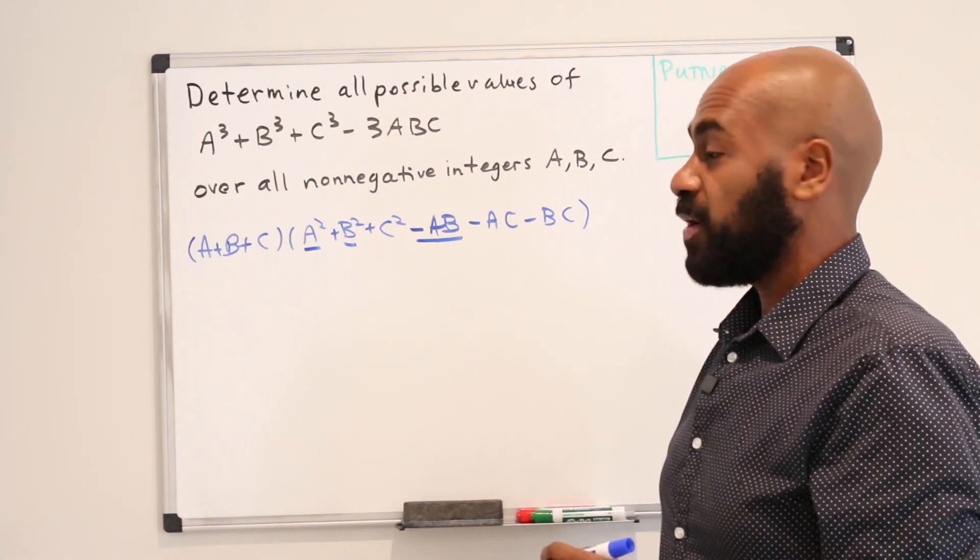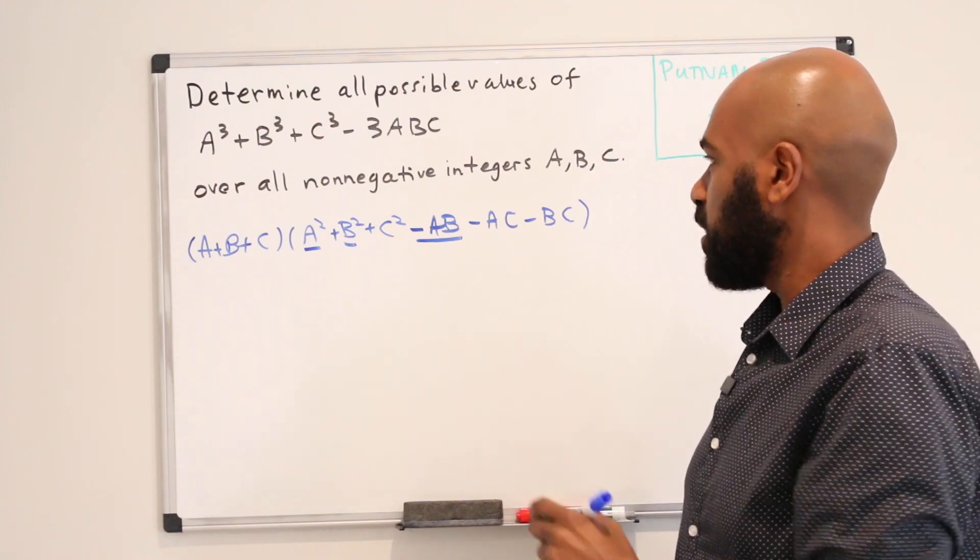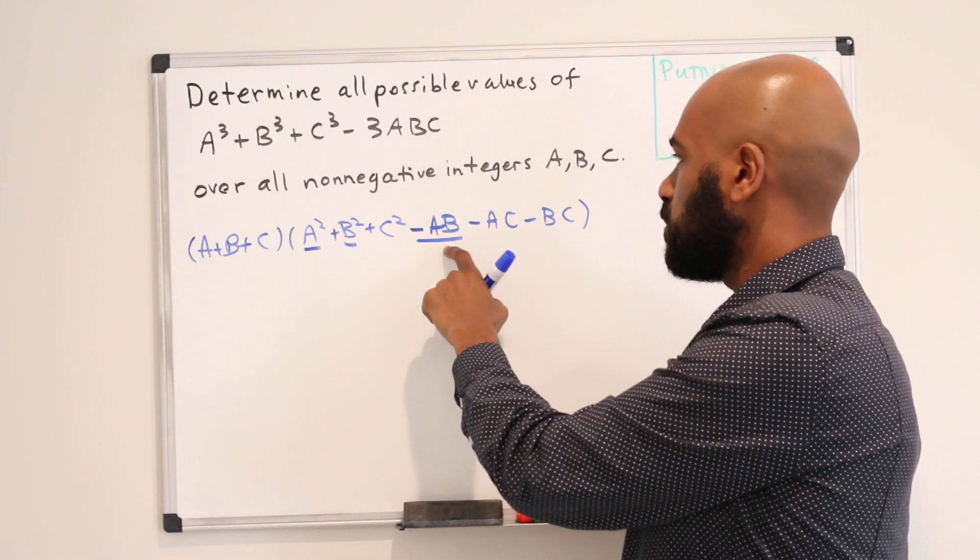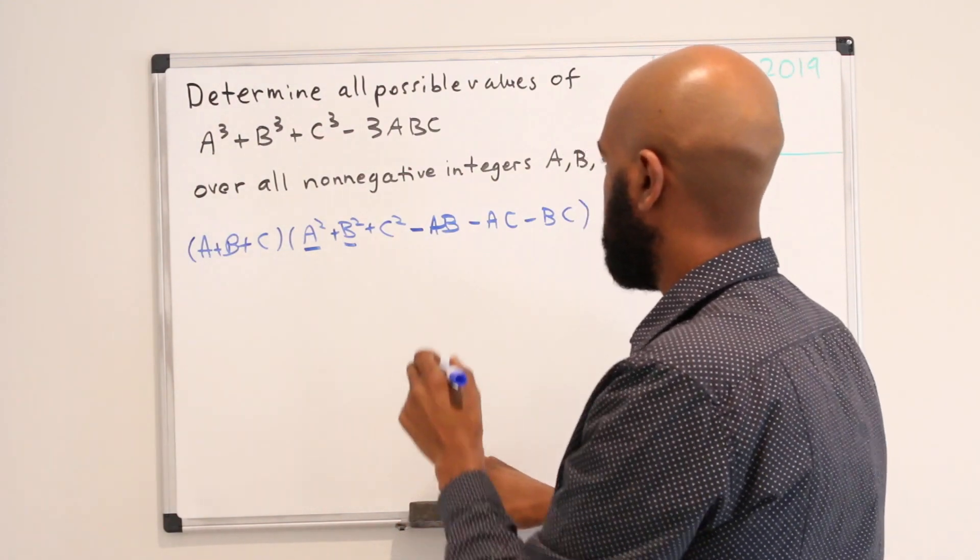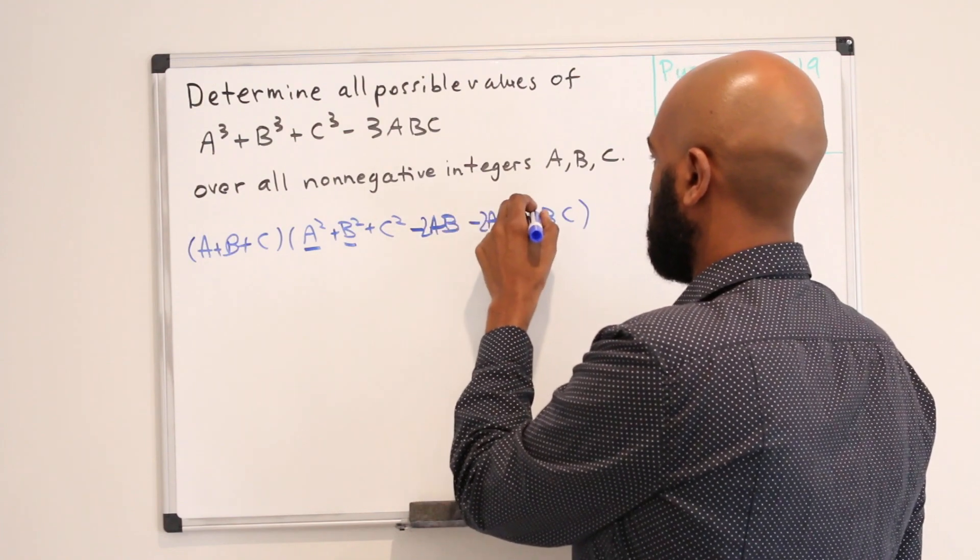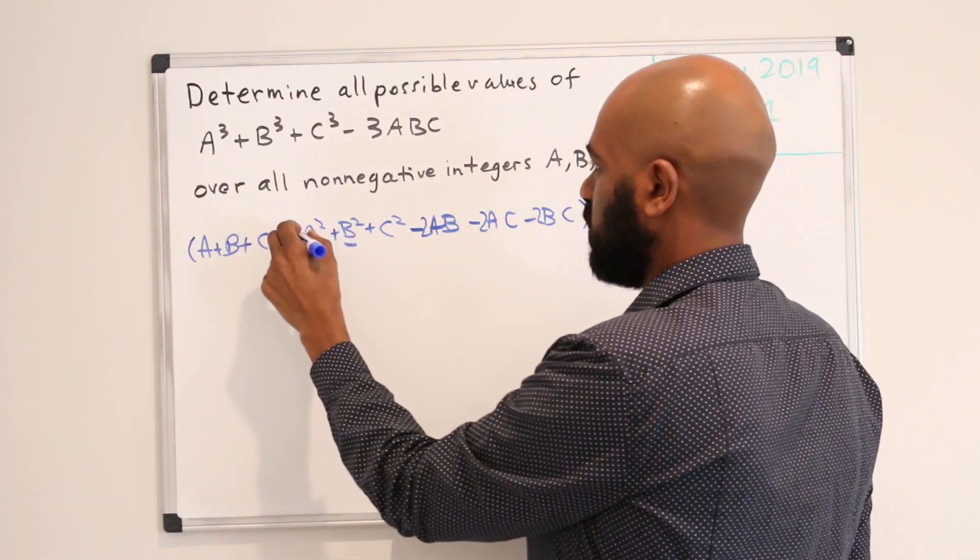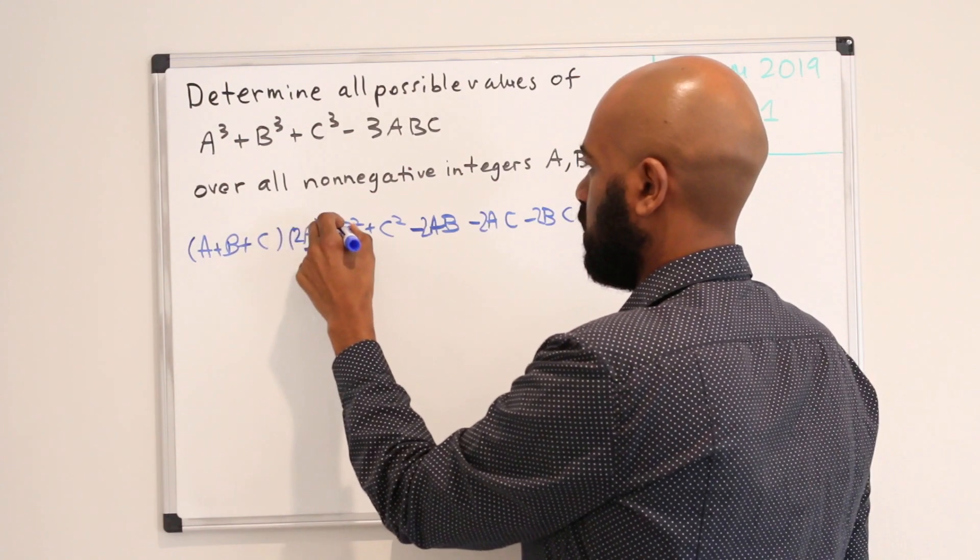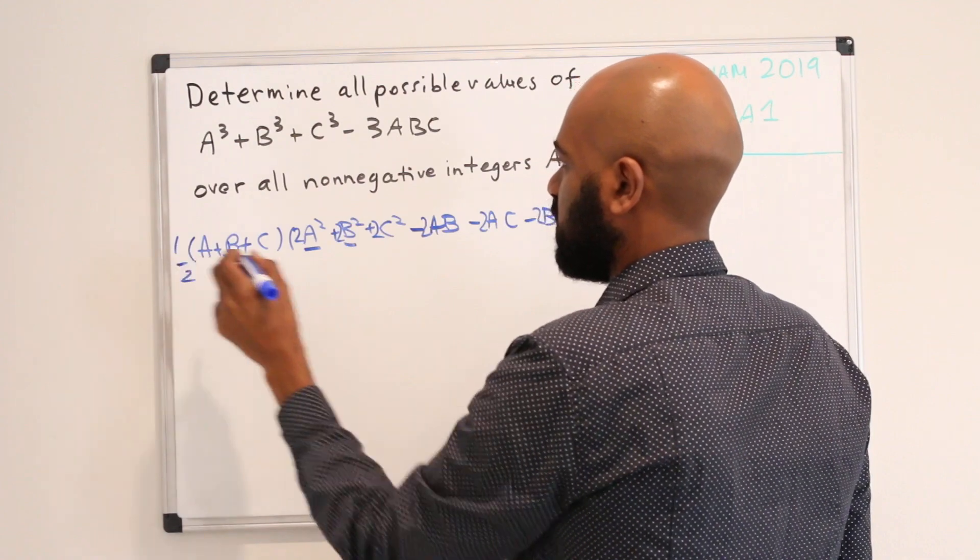So we can force two copies of this by multiplying this by two and by symmetry we ought to do the same thing with everything here but we can't just randomly multiply this by two. We need to multiply these by two and multiply by a half in order to keep the same expression.